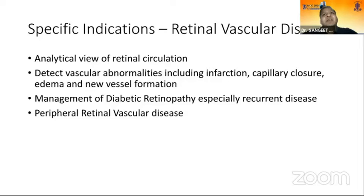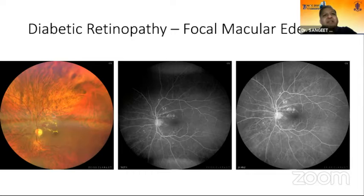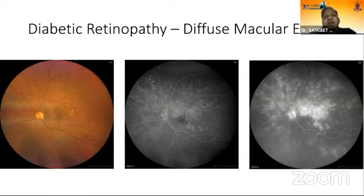The most commonly used indications include retinal vascular disease, where we study retinal circulation and detect vascular abnormalities like infarction, capillary closure, edema, and new vessel formation. In the management of diabetic retinopathy, especially recurrent disease, FFA is indicated. For peripheral retinal vascular disease and peripheral ischemia, FFA is needed — OCT angiography won't give you that picture. If you plan laser for diabetic macular edema, FFA helps differentiate focal from diffuse macular edema: microaneurysms that leak in late phases indicate focal edema, while diffuse macular edema shows a large area of capillary bed leakage requiring grid laser.